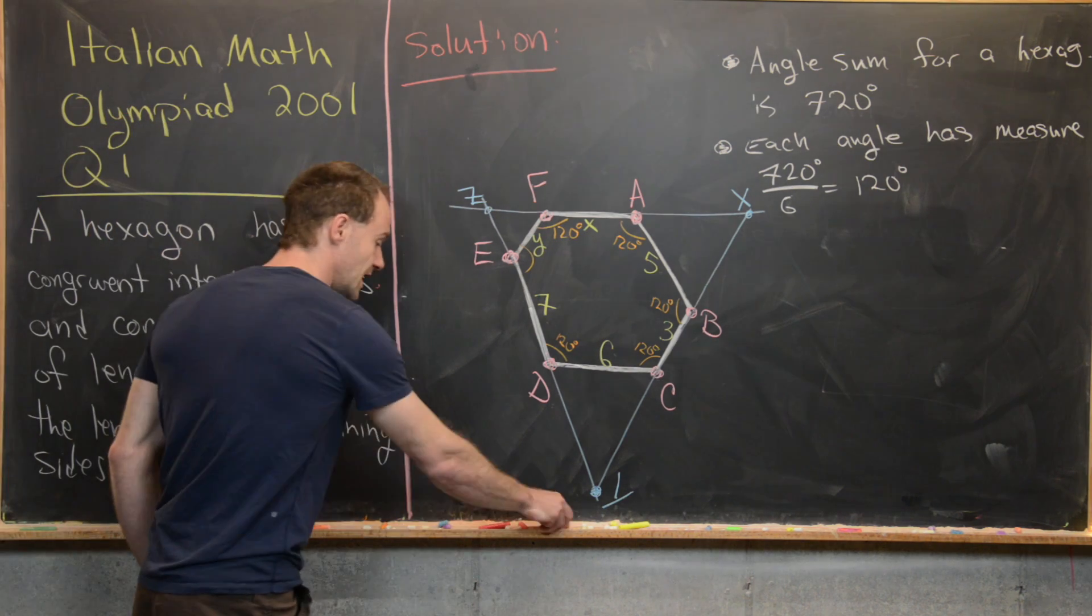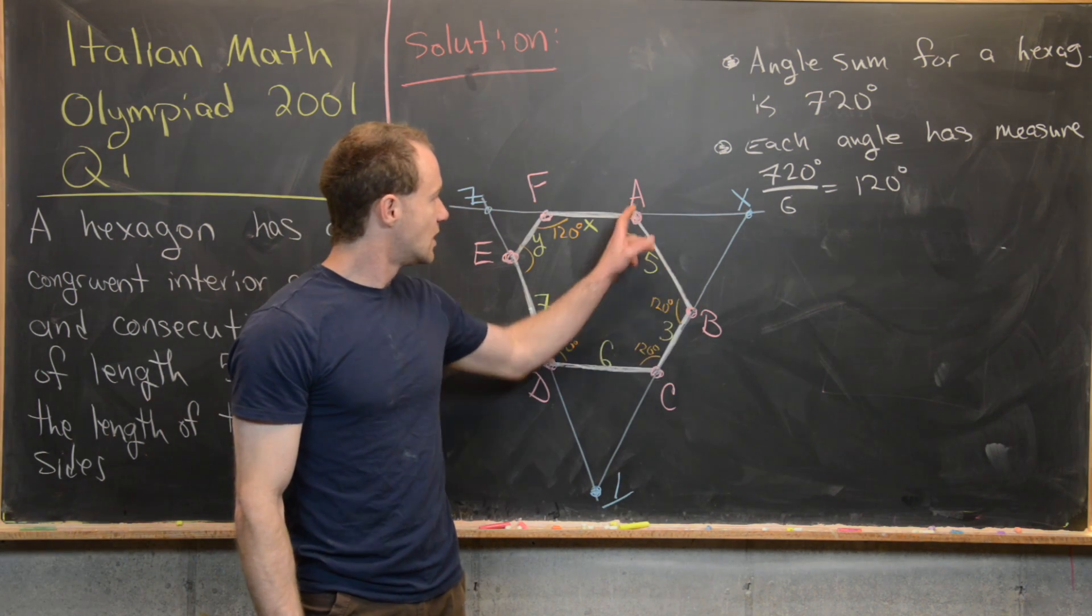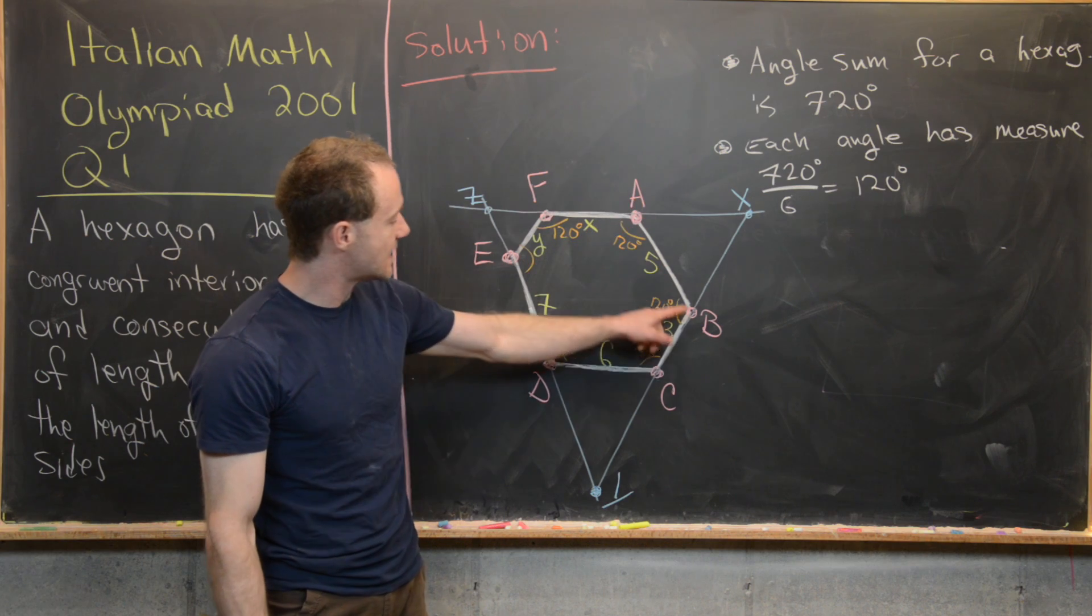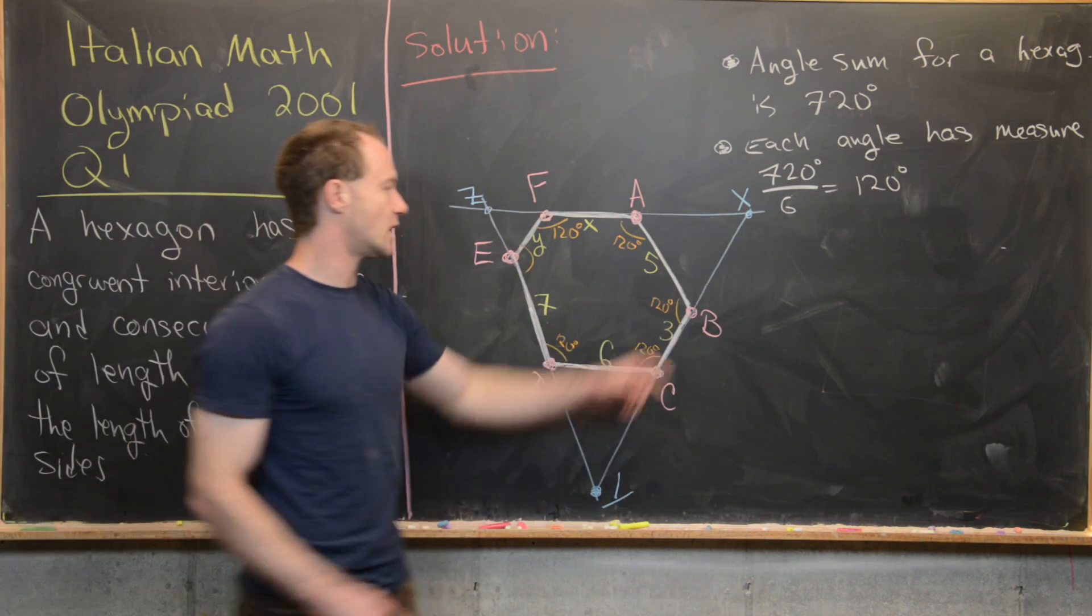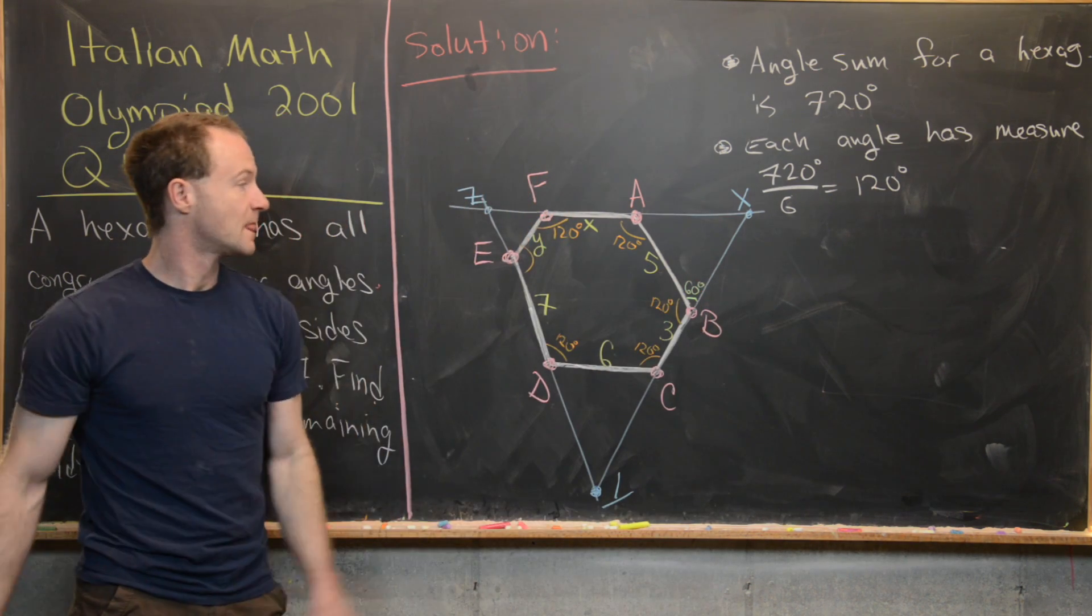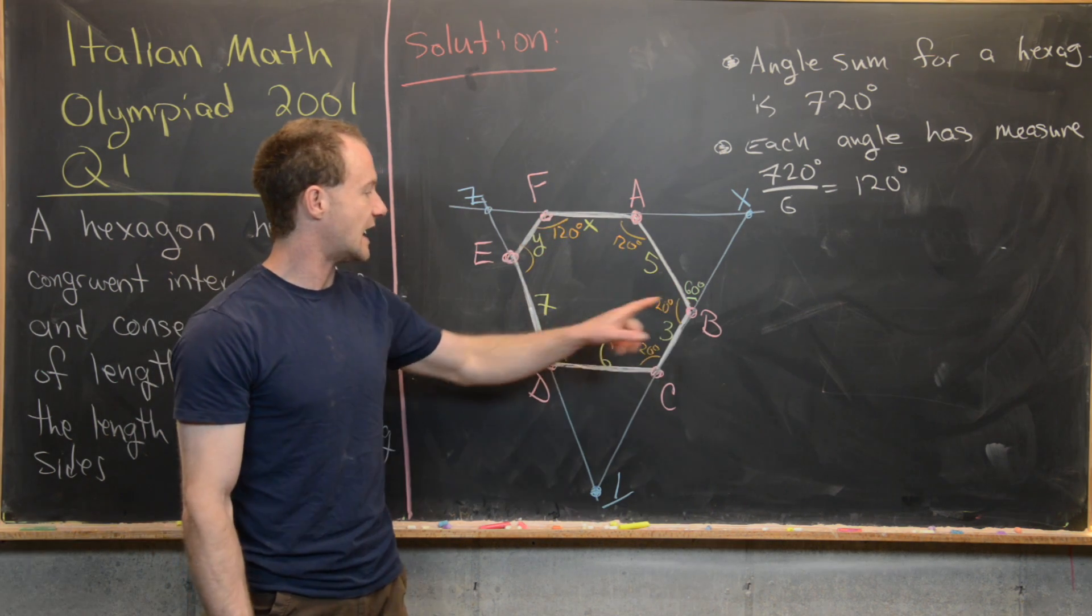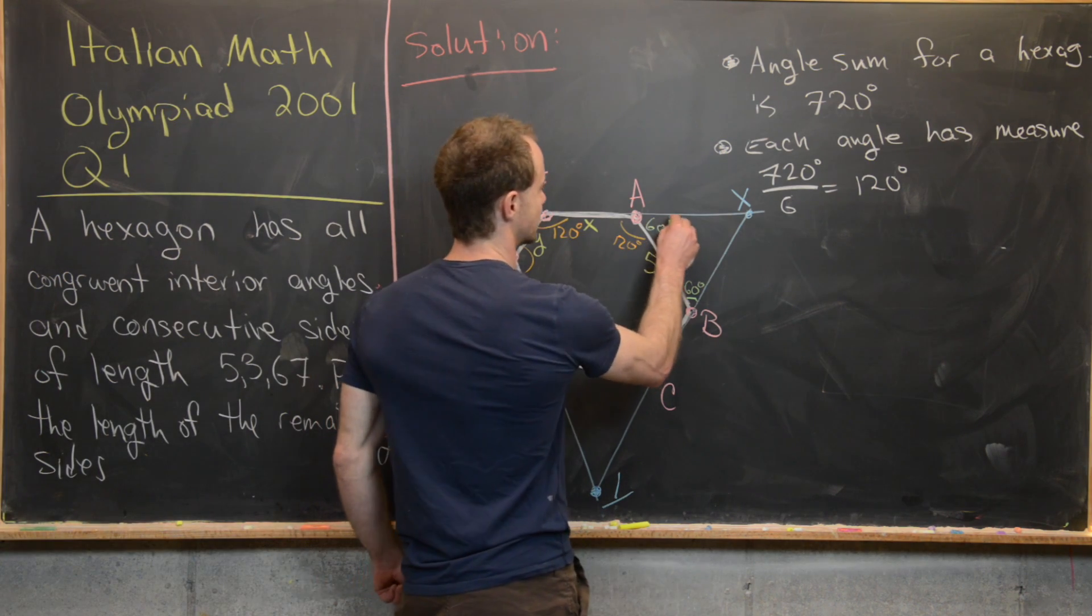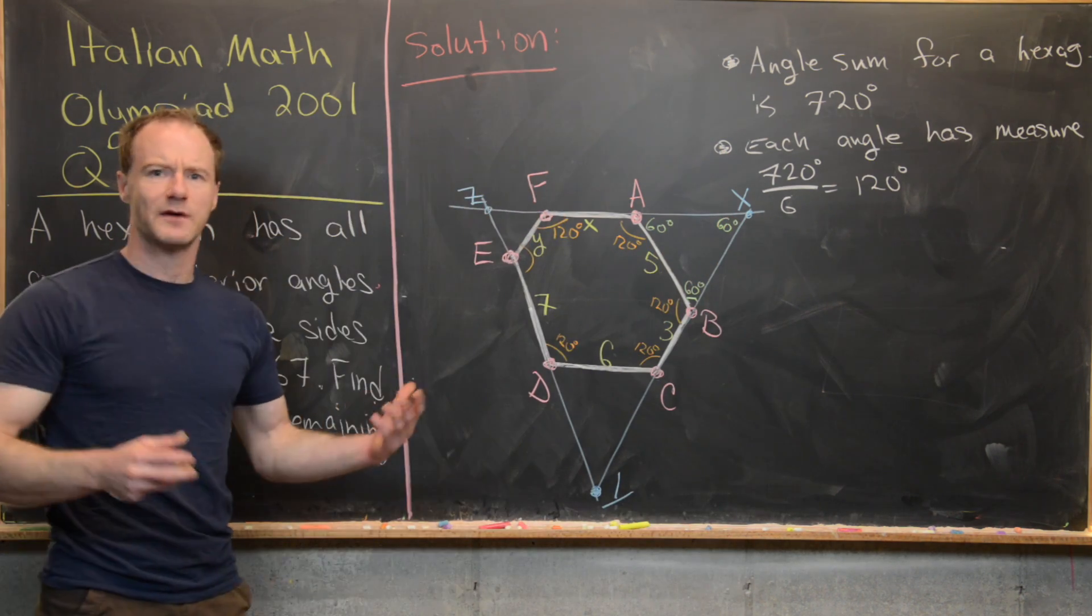Great. Now here's a really important thing: notice that angle ABX is supplementary to angle ABC, because that makes a straight line. So this is 120, so that's going to make this equal to 60 degrees. Good. But we could say the same thing about angle FAB and angle BAX—those are supplementary, which makes this 60 degrees, which also makes this 60 degrees by the sum angle of a triangle is 180 degrees.